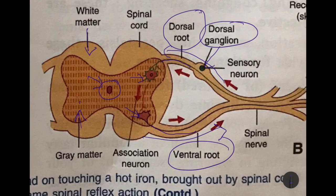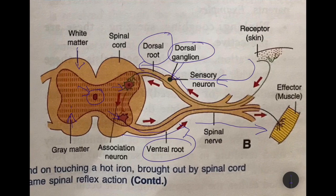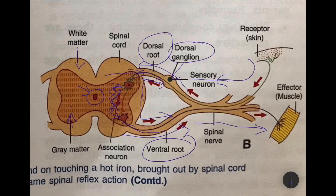Each dorsal root has an ovoid dorsal ganglion. Every spinal nerve is a mixed nerve which has both sensory and motor fibers — sensory fibers bring messages from the skin, and motor fibers take messages back to the effector, the muscle or gland. At the junction of the two roots, the sensory and motor fibers separate out, then both roots enter the gray matter, ending in the corresponding dorsal and ventral projecting horns of the gray matter.